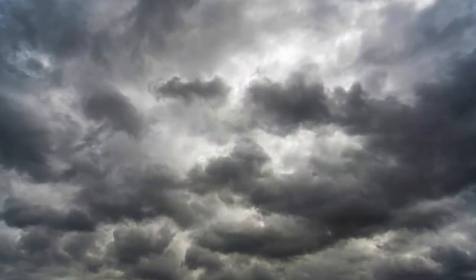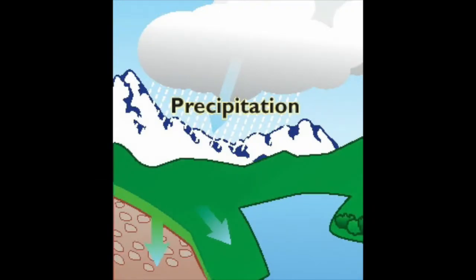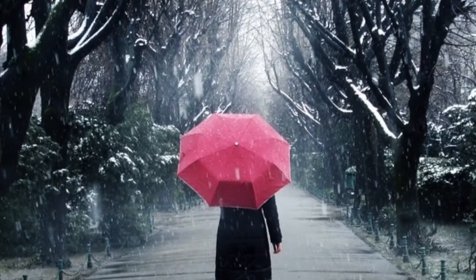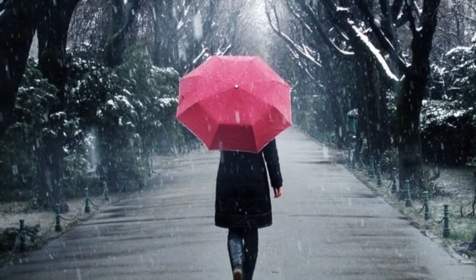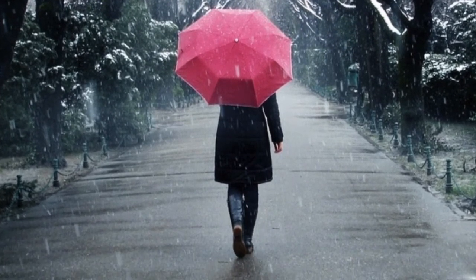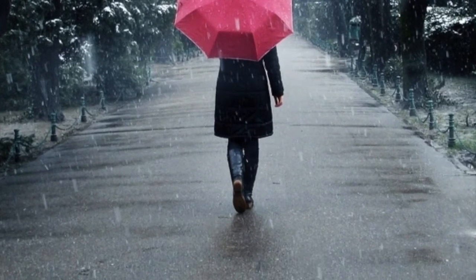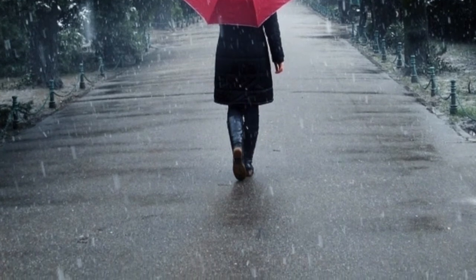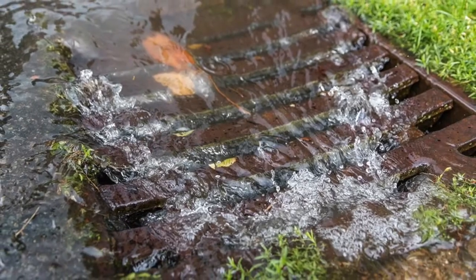When this condensation happens way up in the sky, the clouds get so heavy that they feel they need to cry. Then comes rain and snow, the hail and the sleet — that's precipitation, oh, that's the word on the street.